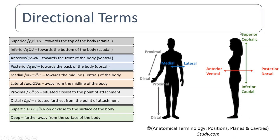Another name for superior is cranial. Another name for inferior is caudal. Then you have anterior and posterior. Anterior means basically front — towards the front of the body. Posterior means basically back — towards the back of the body.